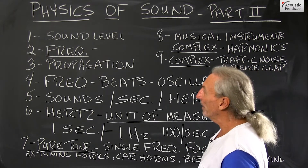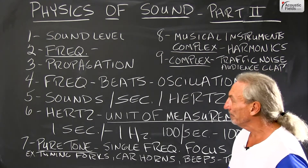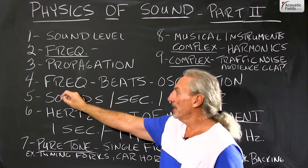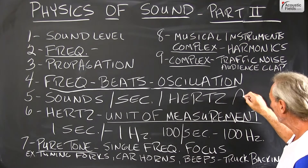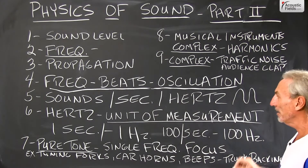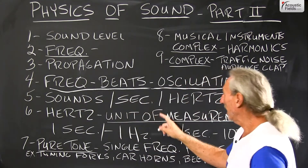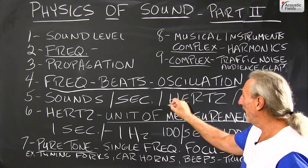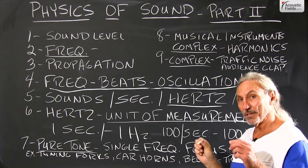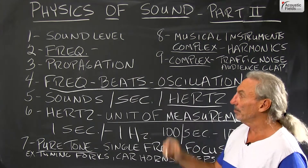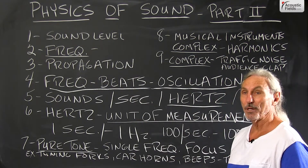So we want to define our terms. In part one we talked about sound level — the strength. Today we're going to talk about frequency. We know from past discussions that frequency is all about beats and oscillation. Energy moves through our room in cycles — it's about cycles per second, defined by the symbol Hz, which is hertz. Just like the decibel was the unit of measure for sound level, hertz is the unit of measure for frequency.